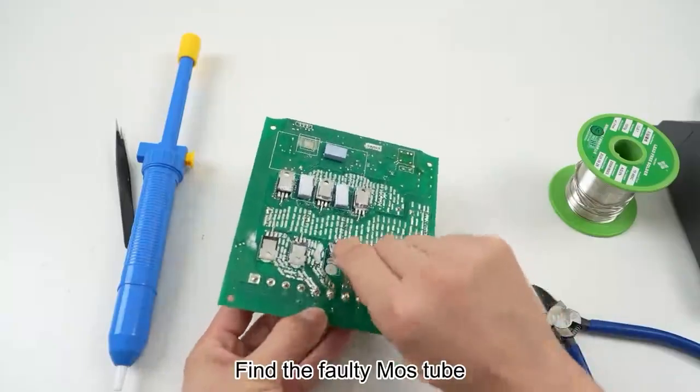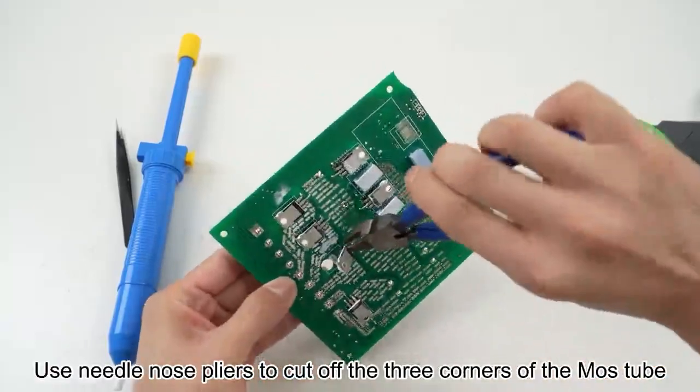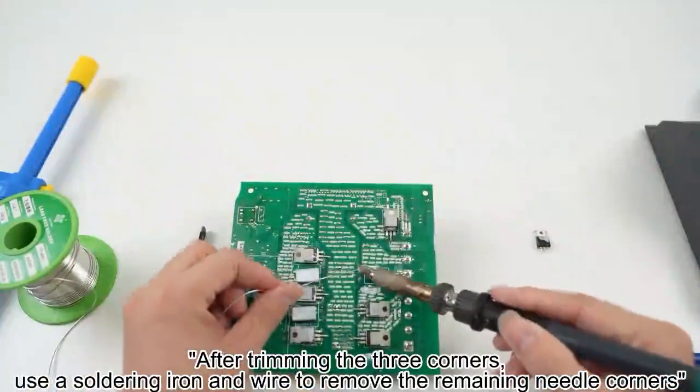Find the faulty MOS tube. Use needle nose pliers to cut off the three corners of the MOS tube. After trimming the three corners,